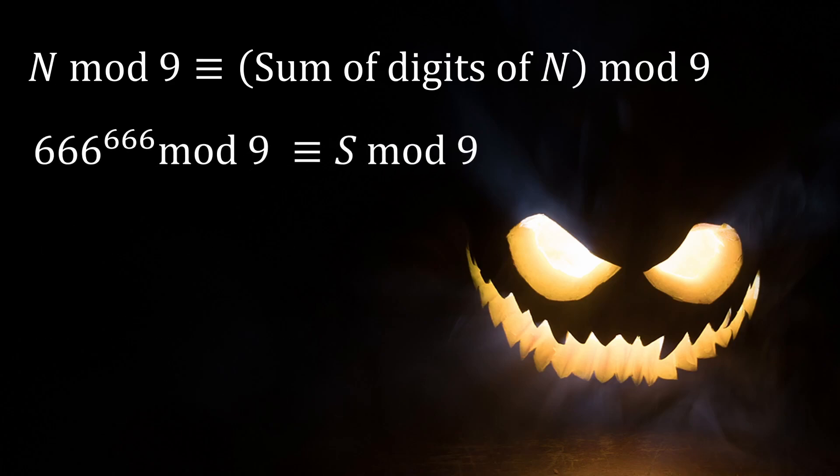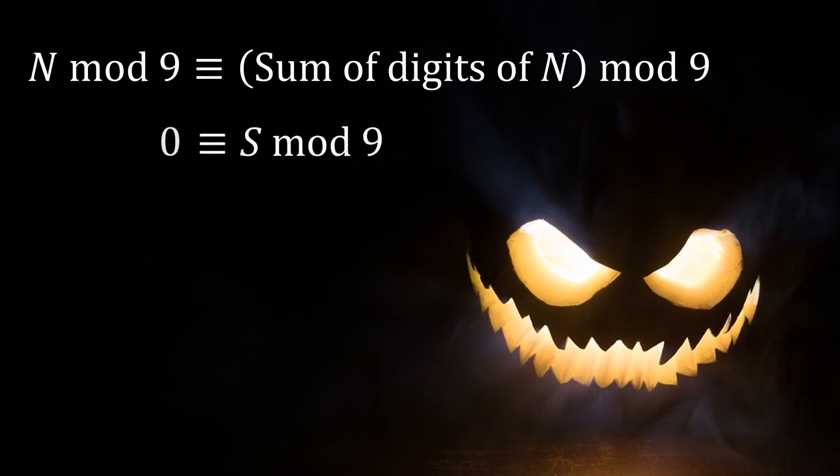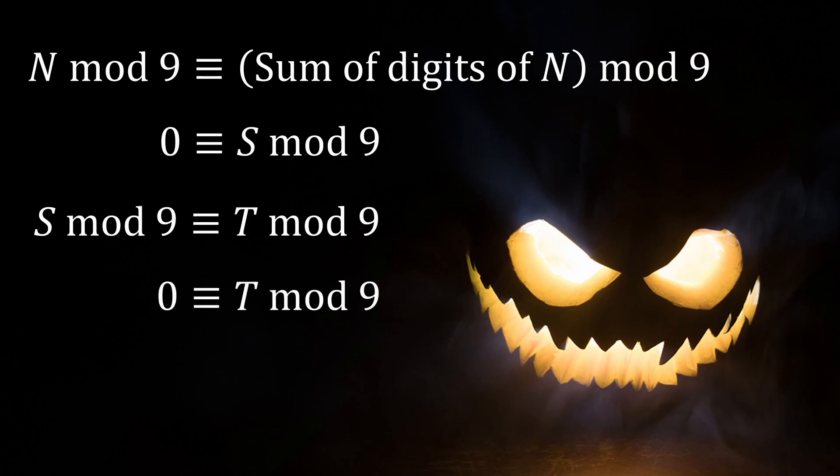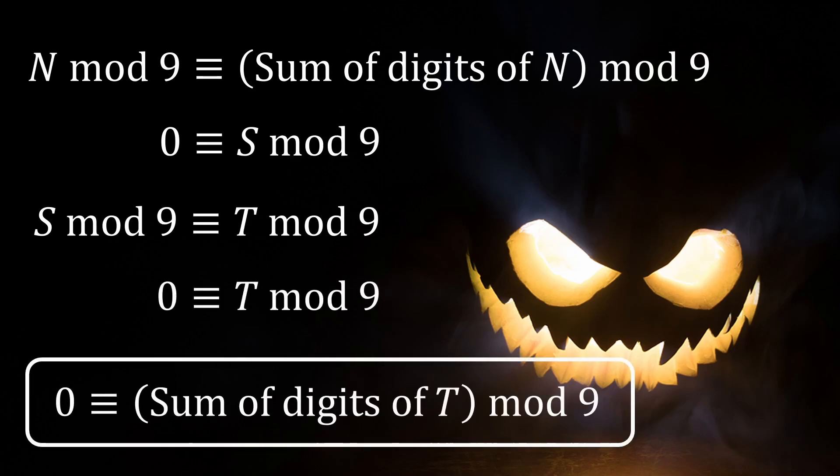Let us therefore set the left side equal to 0. Let's repeat the same steps in going from S to T. We now arrive at the final congruence for the sum of digits of T.